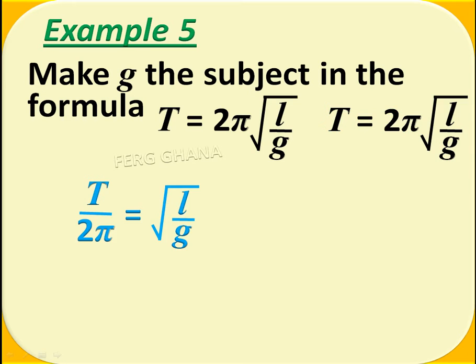Here, by the law of inverse, we have to multiply both sides by 2 pi, and since 2 pi is multiplying, it has to divide the T now. So we have T over 2 pi equals the square root of L over G.